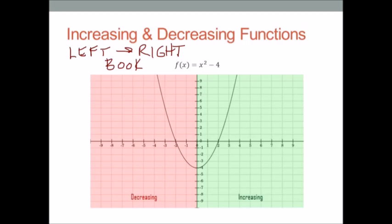I like to think of increasing and decreasing functions like a roller coaster. If I'm going down the hill, you're screaming. As you're going up the hill, you usually hear clink, clink, clink as the car climbs the hill. So starting on the left-hand side and moving from left to right on x squared minus 4, if I was on a roller coaster I would be coming down the hill — so I'd be screaming.